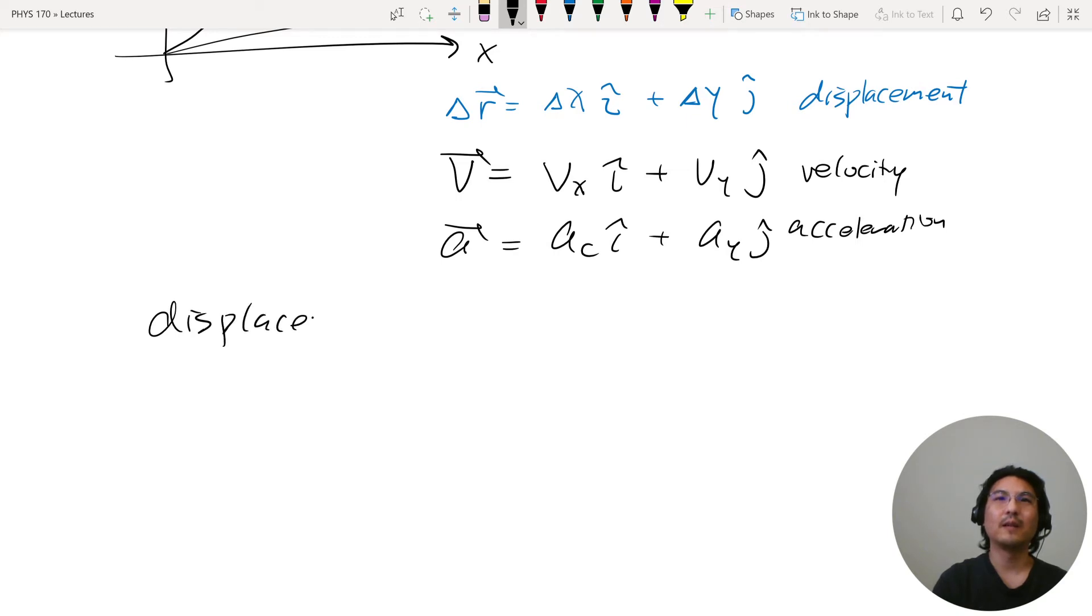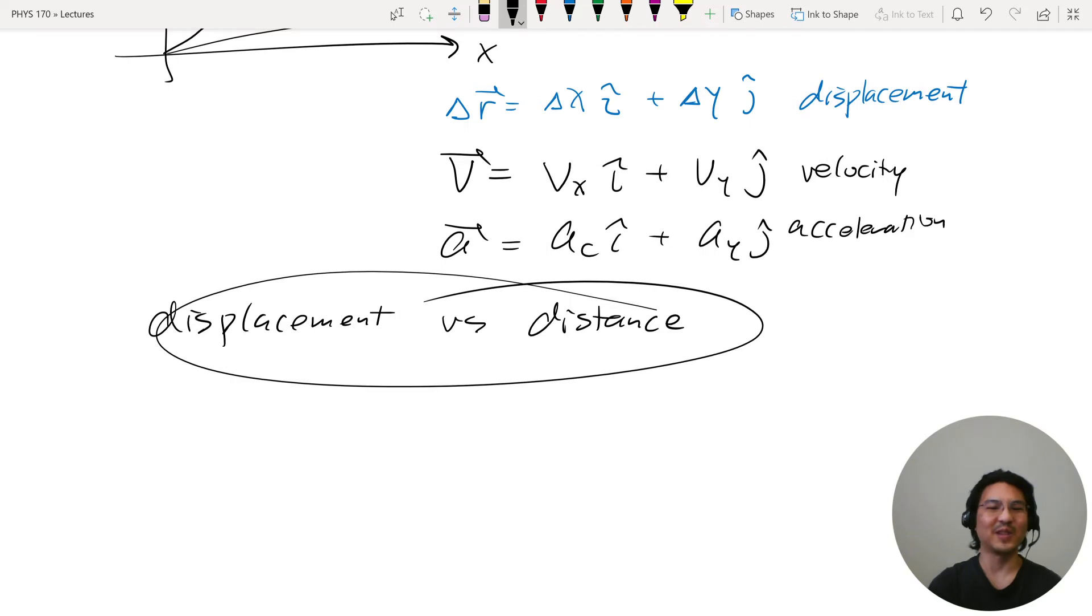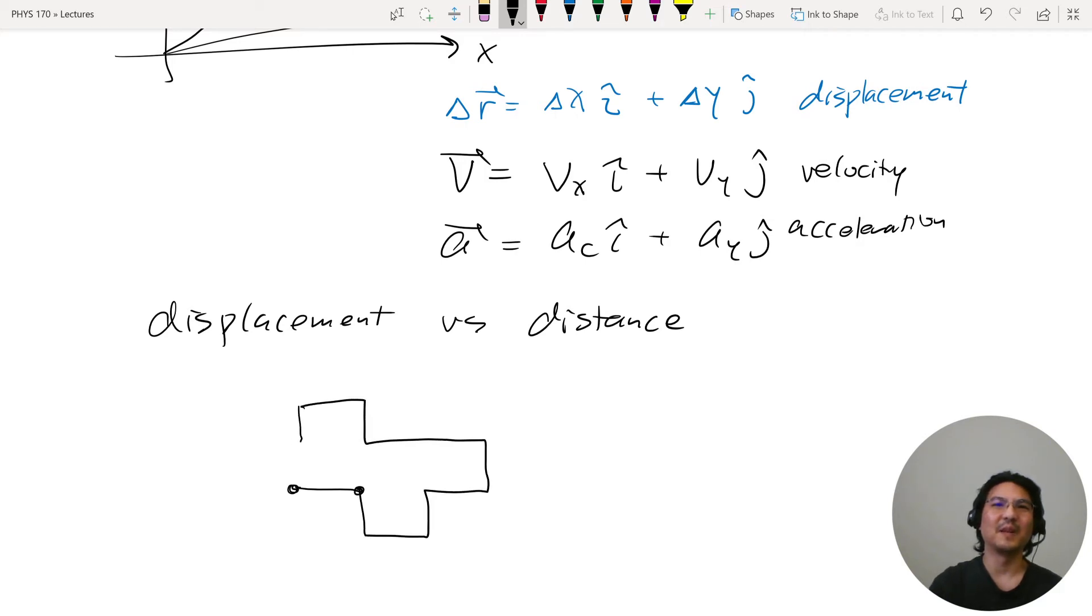So kind of technical jargon. Outside of class, you can just use these interchangeably, like nobody cares. But they have very technical definitions. So let's say you're walking, and then you start over here, and you go like, I'll just make up some, okay, let's say each of these segments is just one meter. Okay, so you start over here, and you end up over here.